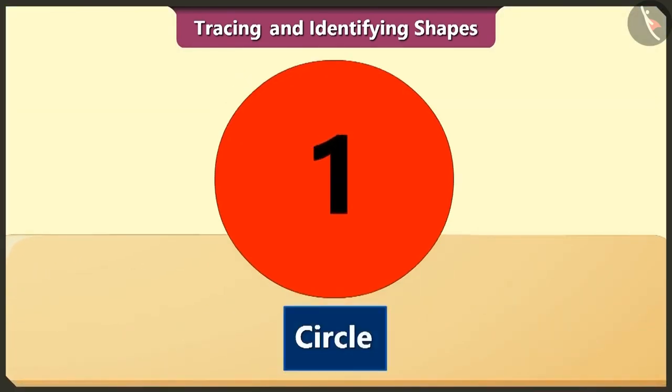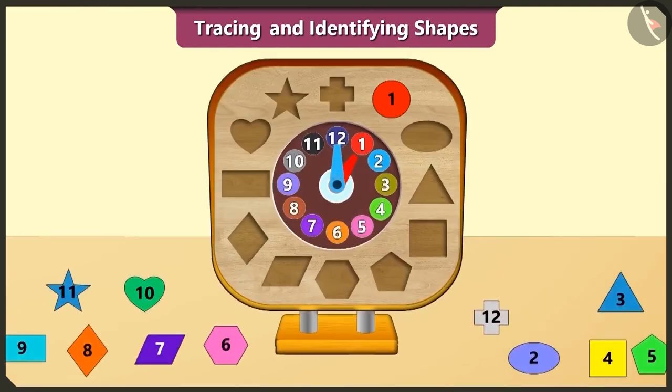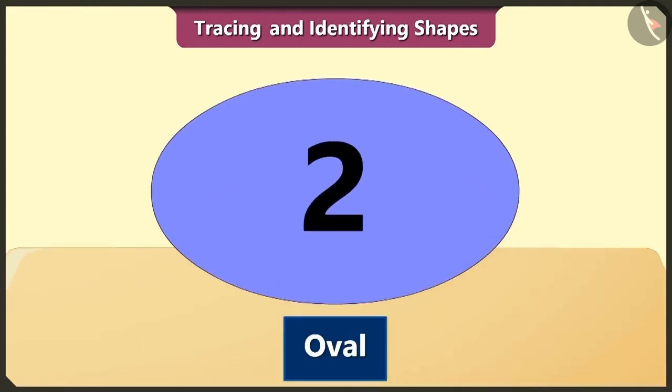Here, the circle is first in order. The oval is second in order. This shape is like an elongated circle. It is also called ellipse.